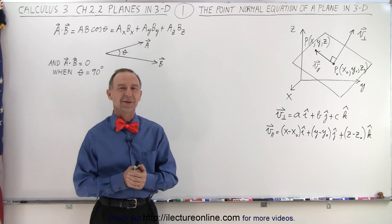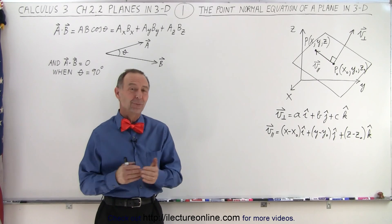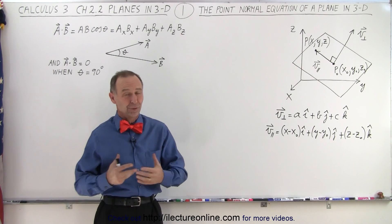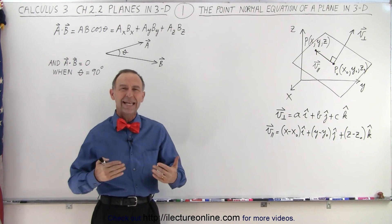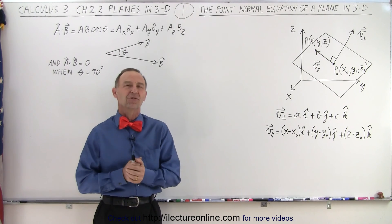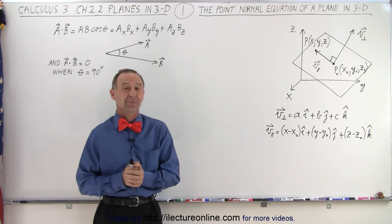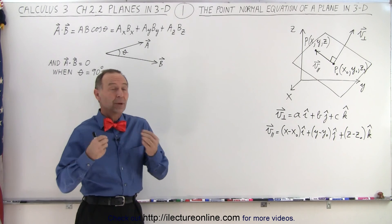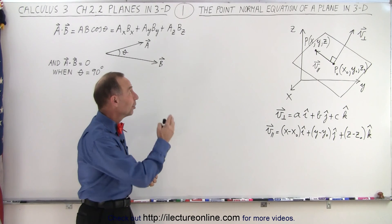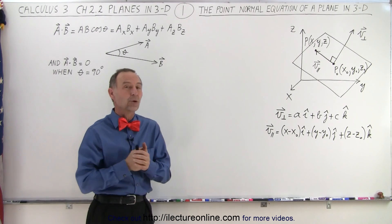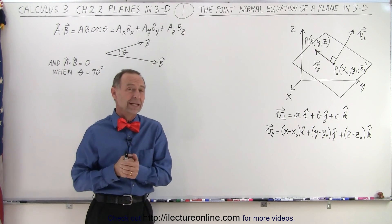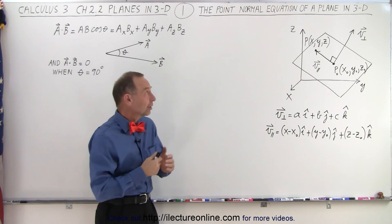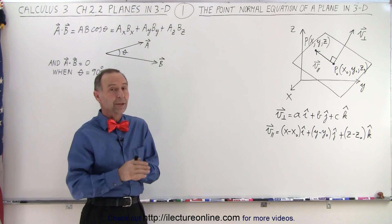Welcome to our lecture online. Here we're starting a new series, a new set of videos, on planes in three-dimensional space. We're going to start out by trying to figure out how we come up with the point-normal equation of a plane in three-dimensional space. Why do they call it the point-normal? Because all you need is a vector normal to the plane and one point on the plane.